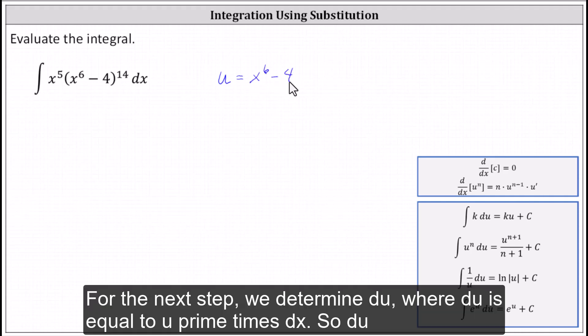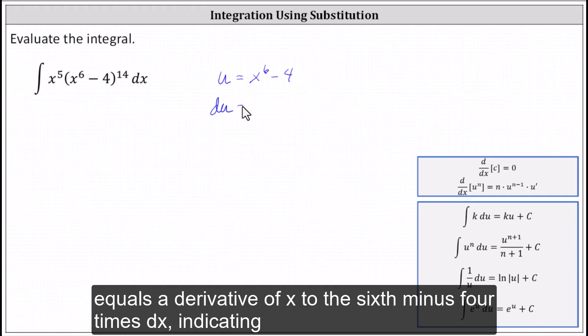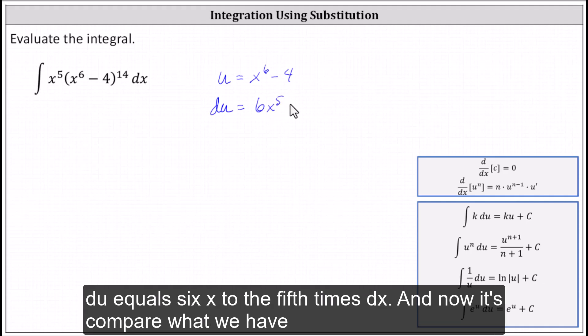For the next step, we determine du, where du is equal to u prime times dx. So du equals the derivative of x to the sixth minus four times dx, indicating du equals six x to the fifth times dx.